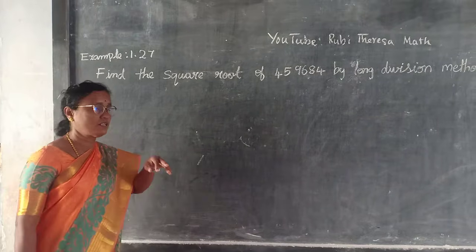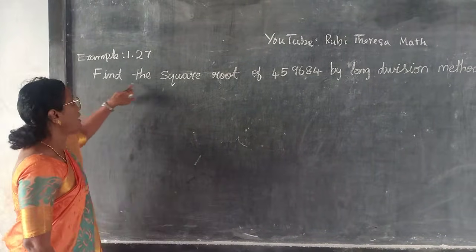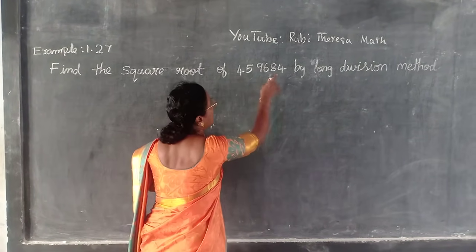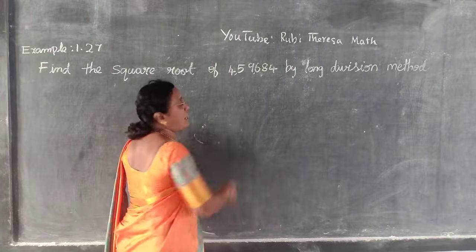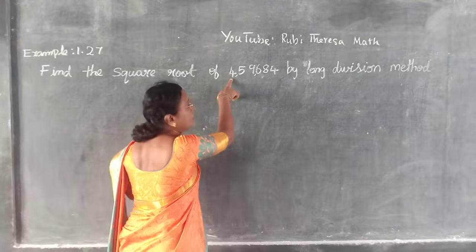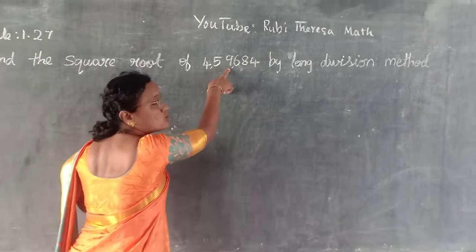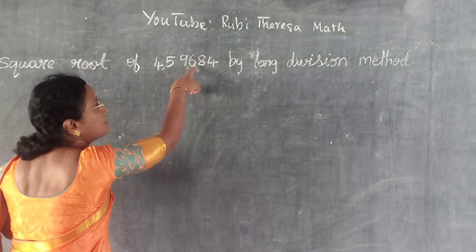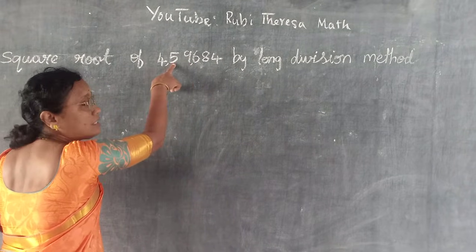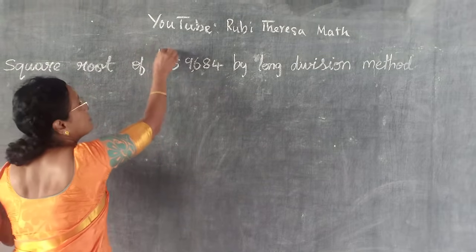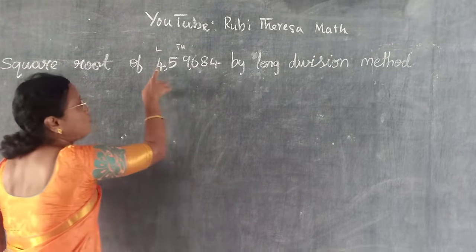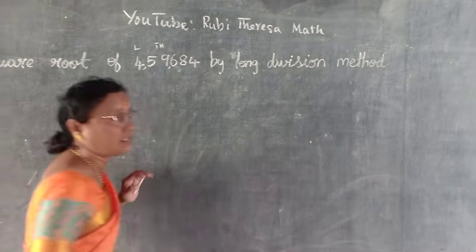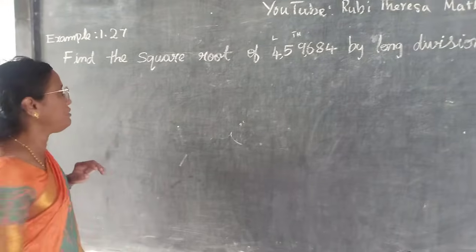Good morning. Listen here children. Find the square root of — you should read the number. Try to put a comma and read the number: 4,59,684. Once — hundreds comma, 1000, 10,000 comma. So this is lakh, this is thousand. So 4,59,684, by long division method.